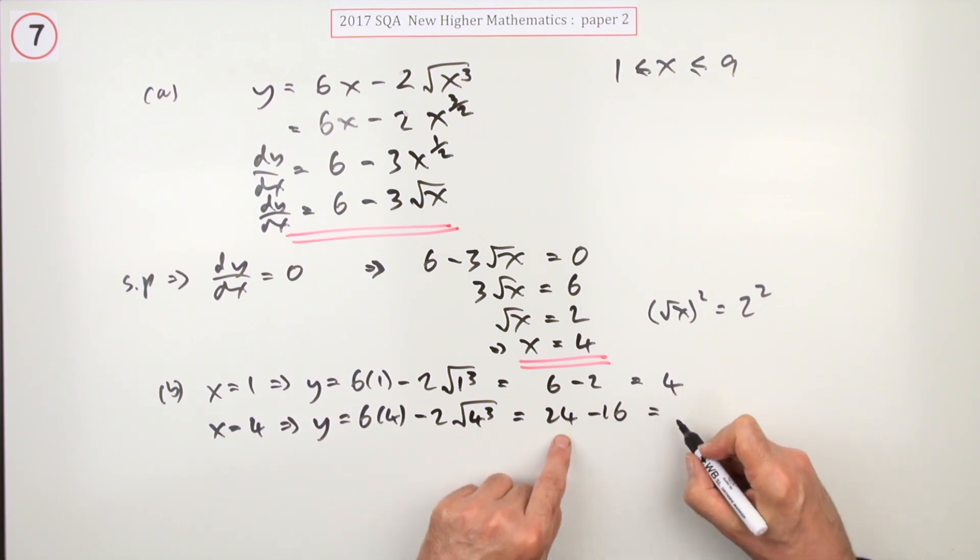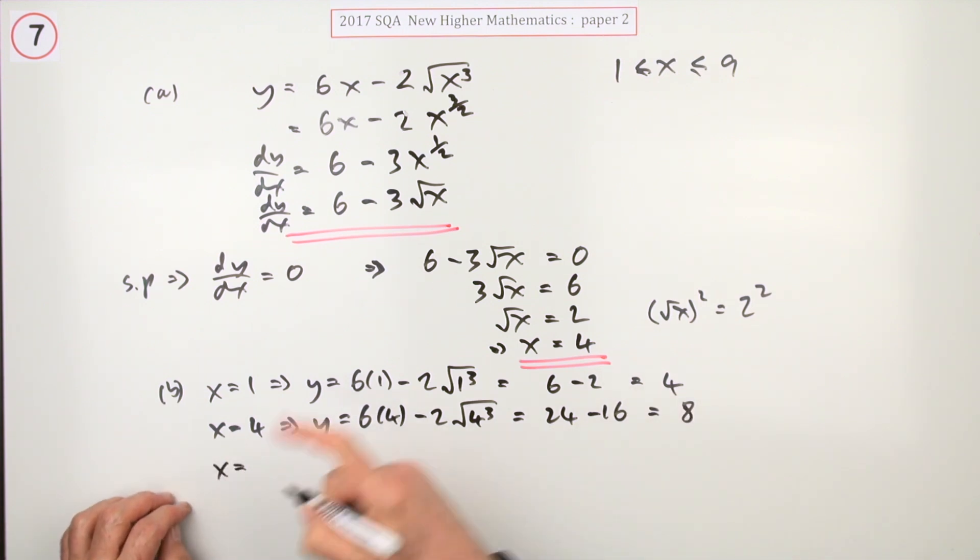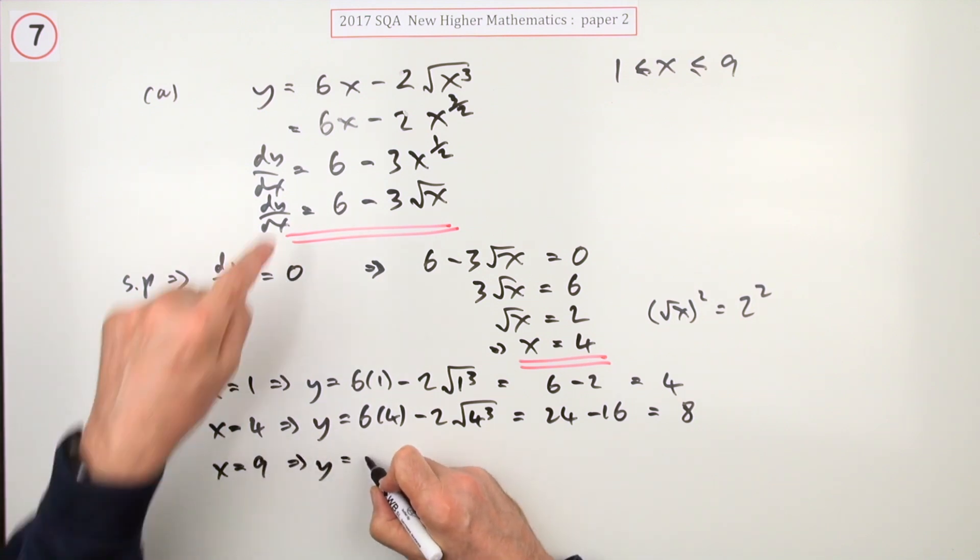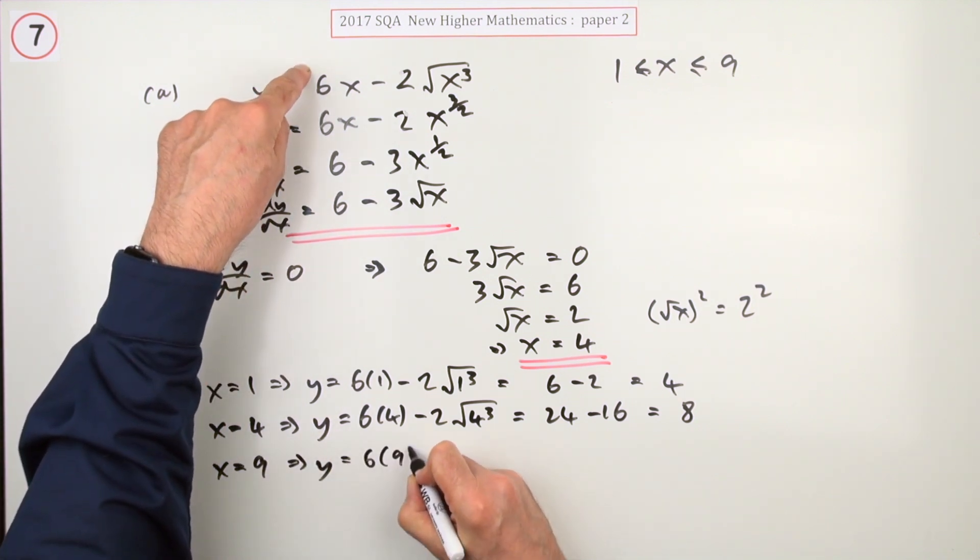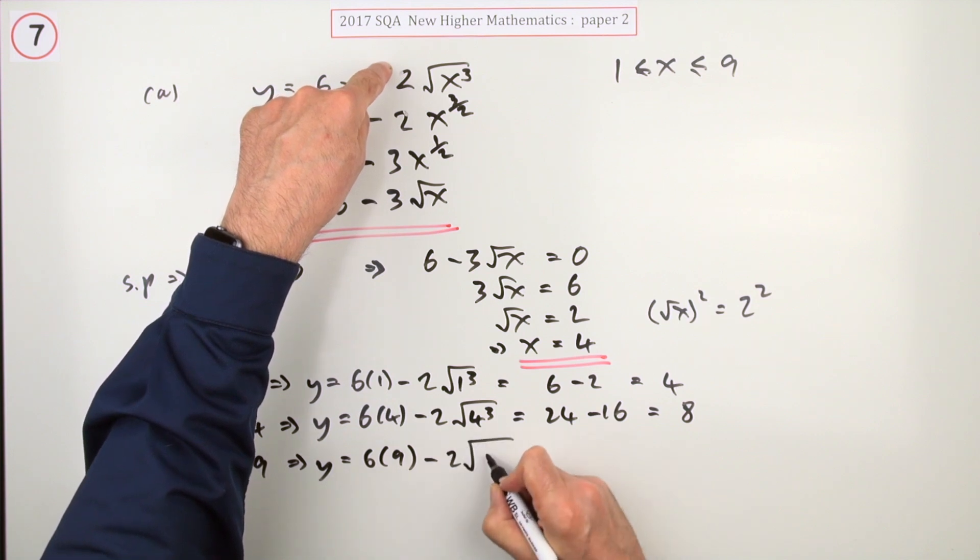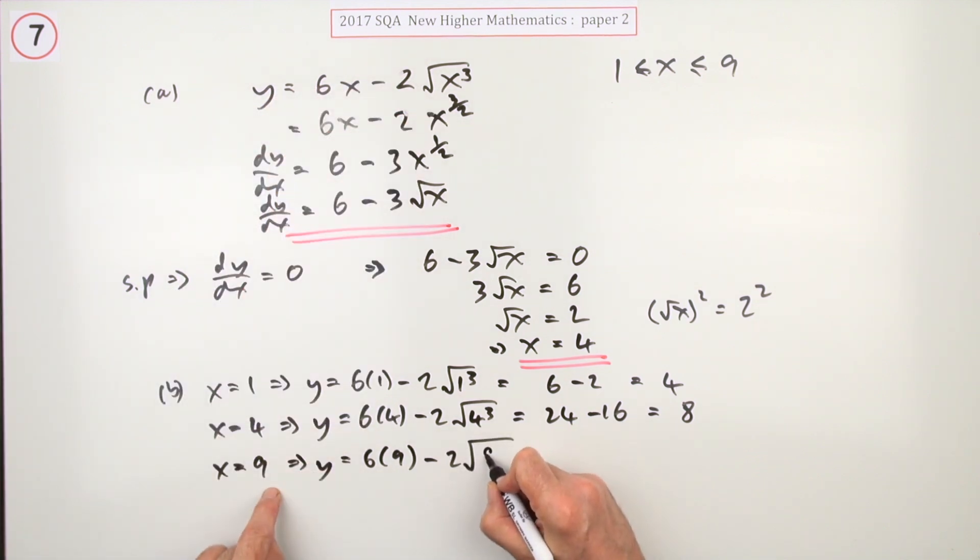Last one, number nine. So at nine you've got, feed it in, 6 times 9 minus 2 times the square root of 9 cubed. Well, 6 nines are 54. The square root of 9 is 3, 3 cubed is 27, and doubling it gives you the 54, which means the answer is zero.